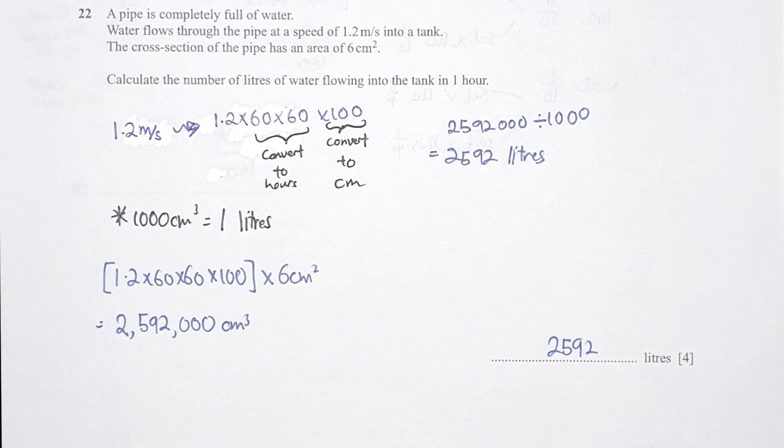Question 22. This is slightly tricky. So first thing that I did was to convert the 1.2 meters per second into cm per hour instead. Because to calculate your final results, it is in liters. So you need to convert your answer into cm first. So by taking 1.2 multiply by 100, multiply by 60 and 60. Then you will get your cm per hour.